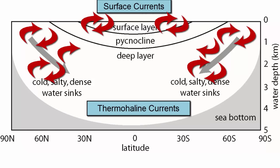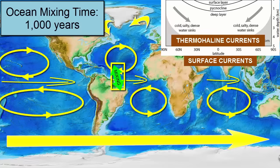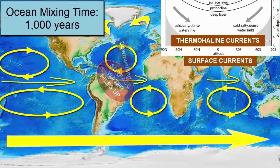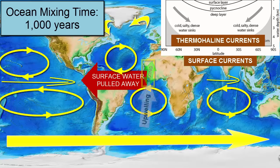But what about elsewhere? We can break through the pycnocline if we allow surface water to pile up in an area. That will cause downwelling — surface water pushed down and mixed with deeper water. Or we can pull surface water away, which will cause upwelling. Deep water rises up and brings its cold temperatures and high nutrient contents to the surface.